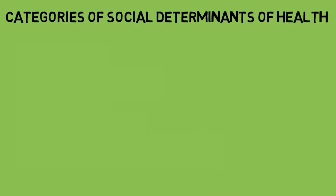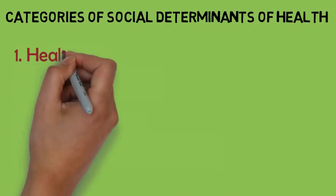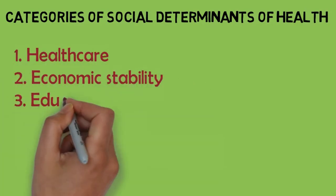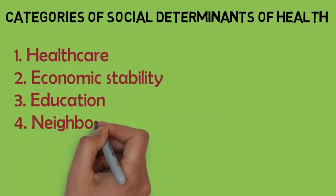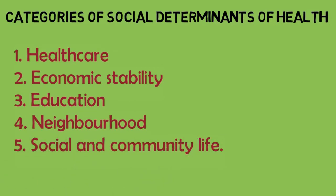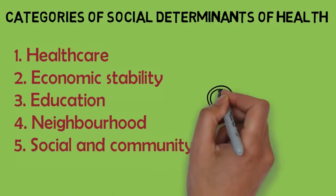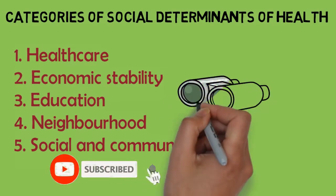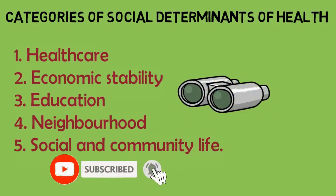Consequently, social determinants of health fall into five broad groups, which are: health care, economic stability, education, neighborhood, and social and community life. Let's look into these broad groups in greater detail.